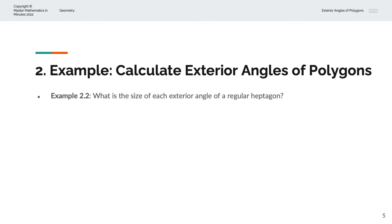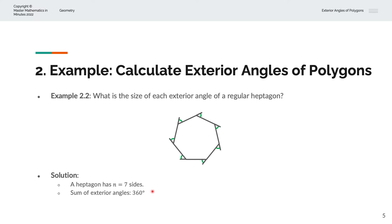In the second example, we're asked to calculate the size of each exterior angle of a regular heptagon. Visually, we have a heptagon with the exterior angles labeled. We know that a heptagon has seven sides, so n equals 7. The sum of exterior angles is 360 degrees, so each exterior angle is 360 degrees divided by 7, which equals 51.43 degrees. This is the same for all other exterior angles because this is a regular heptagon with equal sides.